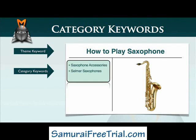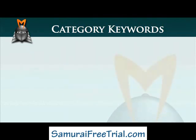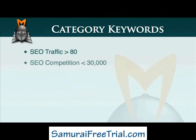From an SEO perspective, category keywords are phrases that are related to your theme keyword and also meet the same SEO criteria as your theme keyword, which you'll remember was as follows: they have an SEO traffic value of greater than 80, they have an SEO competition value of less than 30,000, and they have a phrase to broad match ratio of greater than 15%.